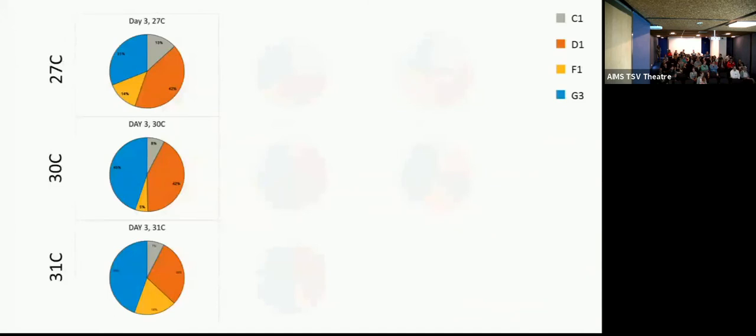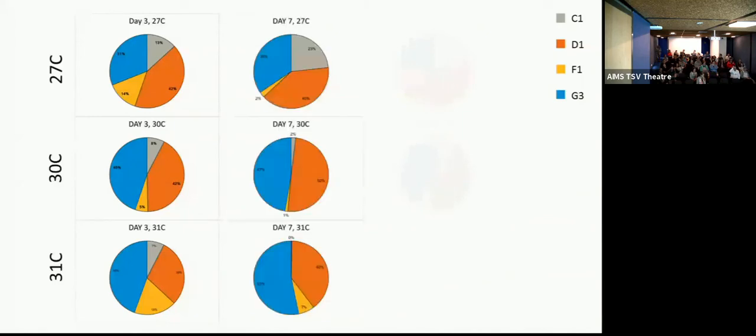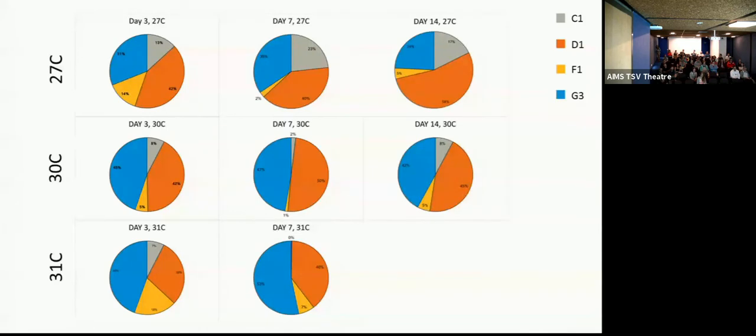So these are pie charts, 27, 30, and 31. C1 is in gray, D1 orange, yellow is F1, and blue is G3. And you can see at 27 degrees, there's the highest amount of C1, which is what we sort of expect. And then you can see that these start to change as the time goes forward. So in these higher treatments here, you can see that our Cs drop out to 2% and 0%. We've got D and G as our most prevalent symbiotic types.